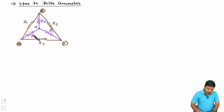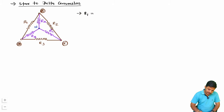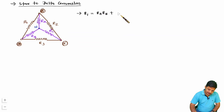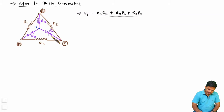To calculate the delta network element R1, you multiply each pair of star resistors and add them: RA·RB + RA·RC + RB·RC, then divide by the opposite resistance of R1, which is RC. So R1 = (RA·RB + RA·RC + RB·RC) / RC.